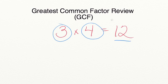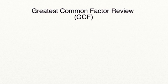So when we're trying to find the greatest common factor of two numbers, we're trying to find the greatest factors that they both have in common. To start, we are going to list all of the factors for two different numbers, and then we're going to compare those factors to find the greatest common one that they both have.